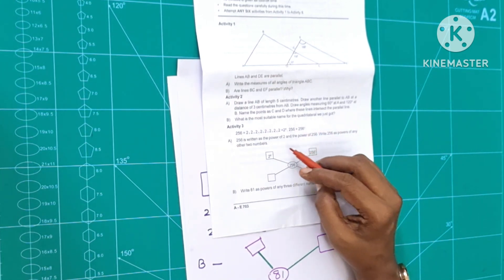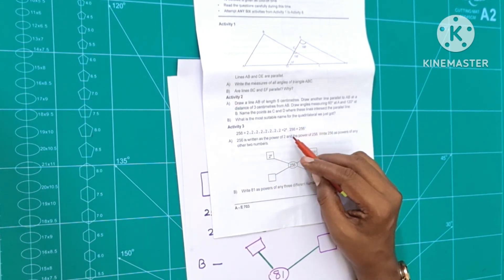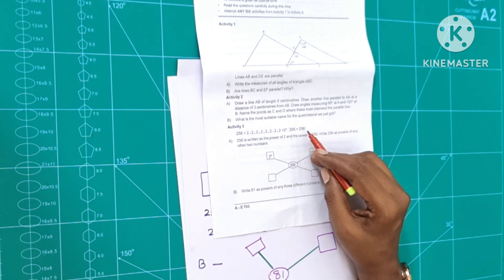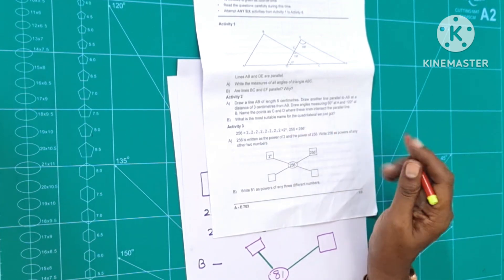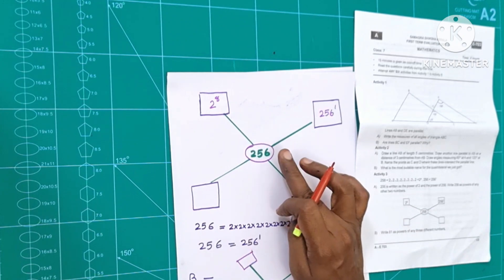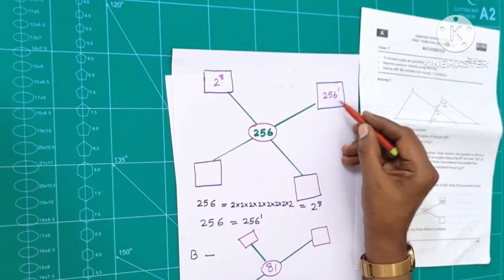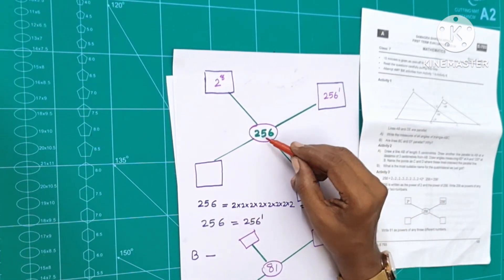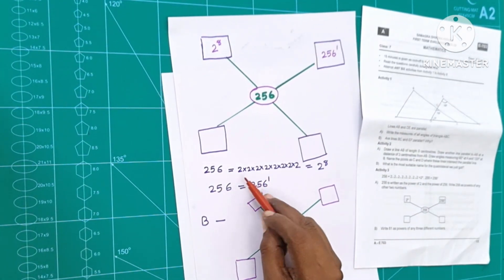That means, if you have any number as 2 to the power giving 256, you can read the number. We are going to work on this. Here we are going to raise 2 to the 8th power — 2 raised to 8.